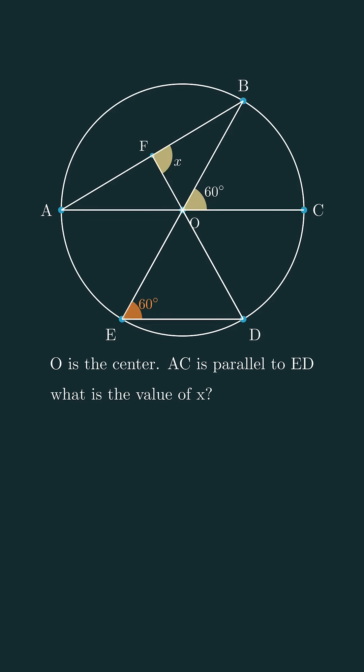Now since O is the center of the circle, segments OE and OD are radii, which means the angles they subtend are equal. In fact, we've got an equilateral triangle here because all its angles are 60 degrees.